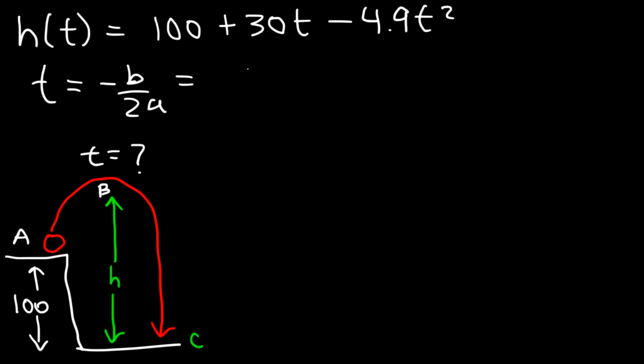So now let's use this equation. So b is the number in front of t. That's 30. a is the number in front of t squared which is negative 4.9. So it's going to be negative 30 divided by negative 9.8, which is 2 times 4.9. So it's going to take about 3.061 seconds to reach the maximum height.